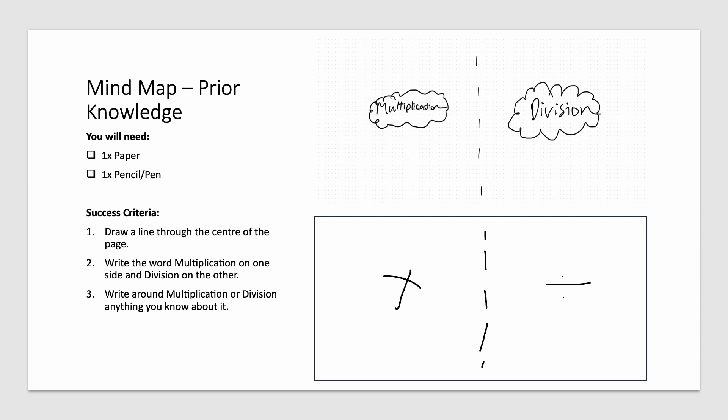Multiplication on one and division on the other. Then, write around each type of equation what you think you know about it already. This is called prior knowledge.